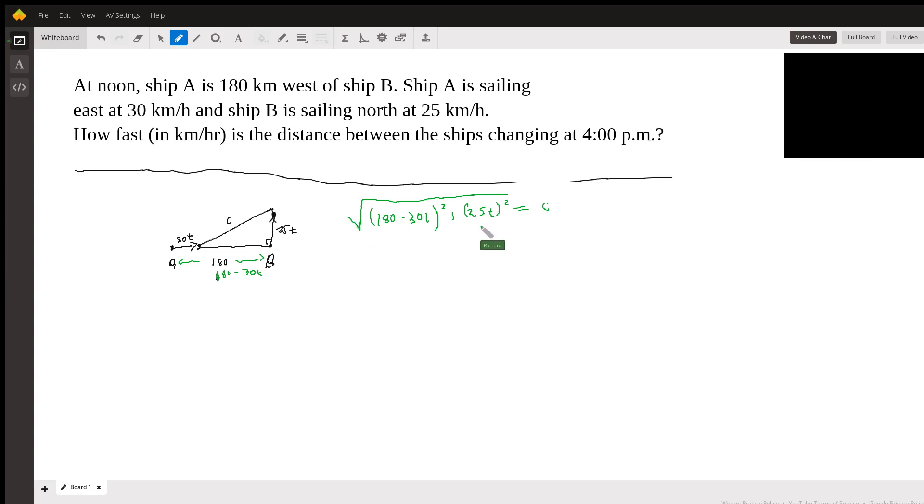Okay, so that's fairly easy. And now all we have to do—this is c(t), this is the length at time t. And what we want, the initial time was noon and then it's four hours later, so what we really want is c'(4). That's what we want.